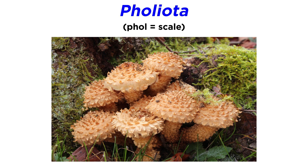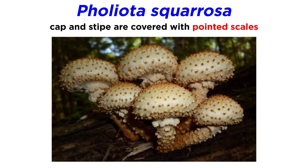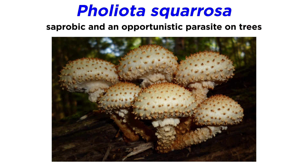Next, let's discuss mushrooms in the genus Pholiota, which gets its namesake from the Greek root 'phol,' which means scale. The type species — meaning the species that mycologists have chosen to represent a genus — is Pholiota squarrosa, or the shaggy scalycap. The mushroom received this name because both the cap and stipe are covered with pointed scales. The mushroom is saprobic and is an opportunistic parasite among a diverse number of trees. An opportunistic parasite can only infect a tree when it is already weakened by a previous infection from bacteria or other fungi.